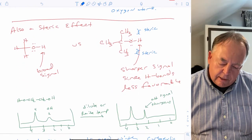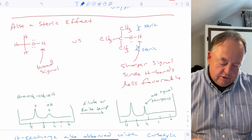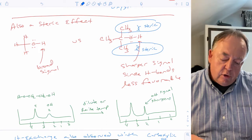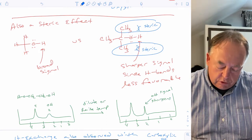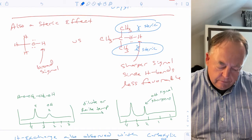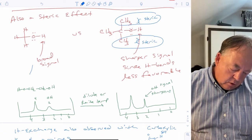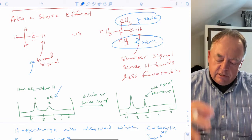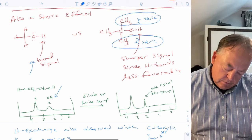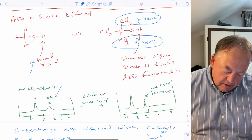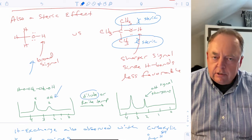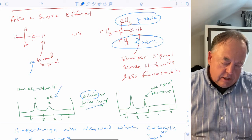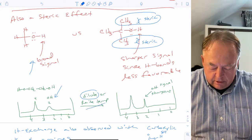There's also a steric effect. Two methyl groups create a sterically congested environment around the OH, reducing its ability to hydrogen bond. For such a sterically hindered alcohol, you'd typically see a broad OH signal. Diluting the sample or raising the temperature disrupts hydrogen bonding and sharpens the OH signal.